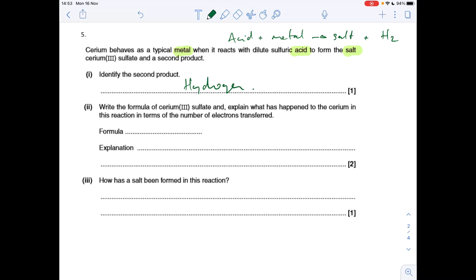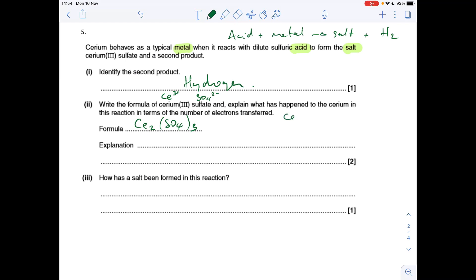Okay, so next part. Cerium Roman III means Ce3+. Sulfate, we should know, is SO4 2-, and so therefore we need two Ce3+ and three SO4 2- to get those charges equal and opposite. So it's Ce2(SO4)3. So in the reaction, the cerium metal has turned into the cerium 3+ ion. So in terms of oxidation numbers, it's gone from zero to +3. How do you do that? You need to lose three electrons. And so it's lost three electrons. It's therefore been oxidised.